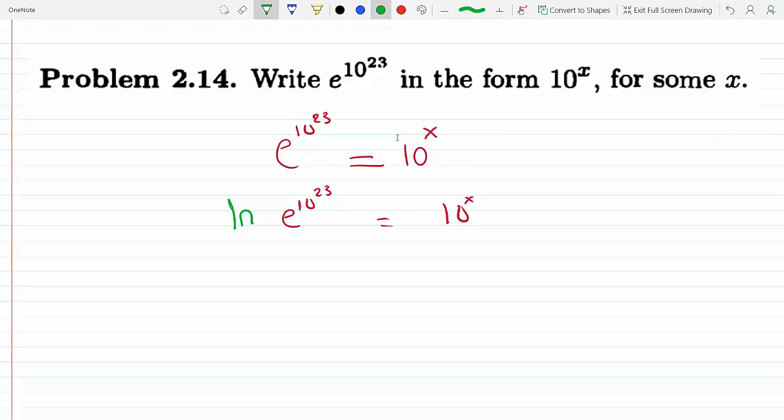So ln of this has to equal ln of this, and by doing so the exponent of the e comes down. This becomes 10^23 times ln(e), and because ln has a base of e, ln(e) is just 1. Here we get x*ln(10). We could have used log base 10 instead.